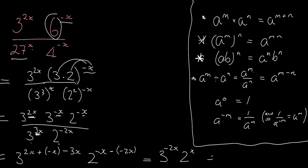And if I want to write everything nicely with positive exponents, this will become 2 to the x. And this because of that negative 3 to the 2x.